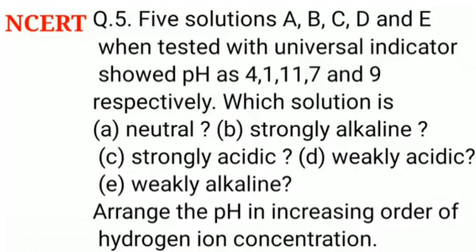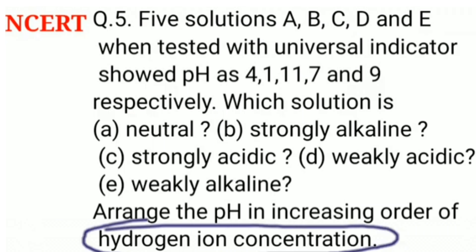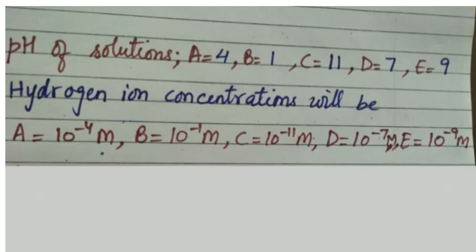In the second part of the question, we are asked to arrange the pH in increasing order of hydrogen ion concentration. For this, we will have to calculate hydrogen ion concentrations of the given solutions. Solution A has pH 4, so hydrogen ion concentration of A is 10 to the power minus 4 mole per liter.